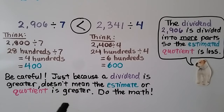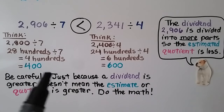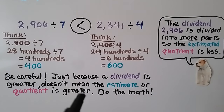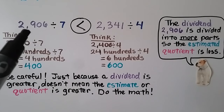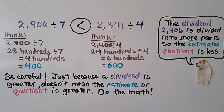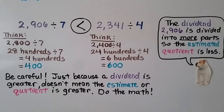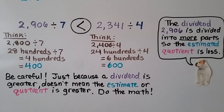Be careful: just because a dividend is greater doesn't mean the estimate or quotient is greater. We need to do the actual math and find the actual estimates. The dividend 2,906 is divided into more parts, so the estimated quotient is less. Do all the math you're supposed to do — don't just look at the dividend to come up with an answer, or you'll get a wrong answer.